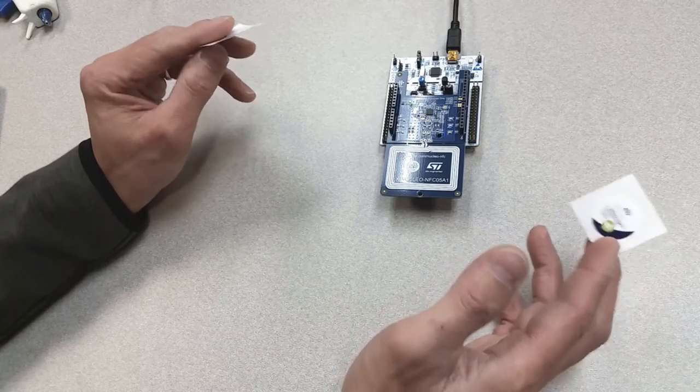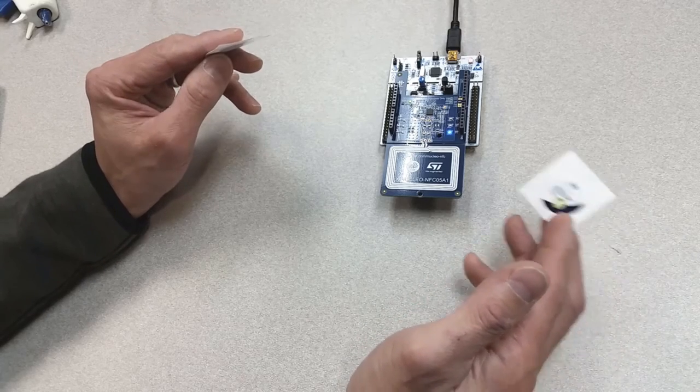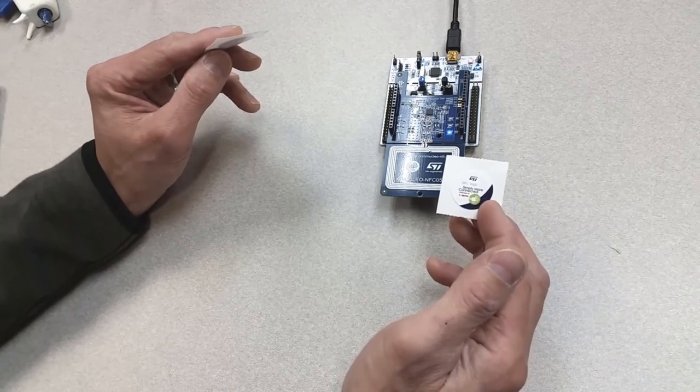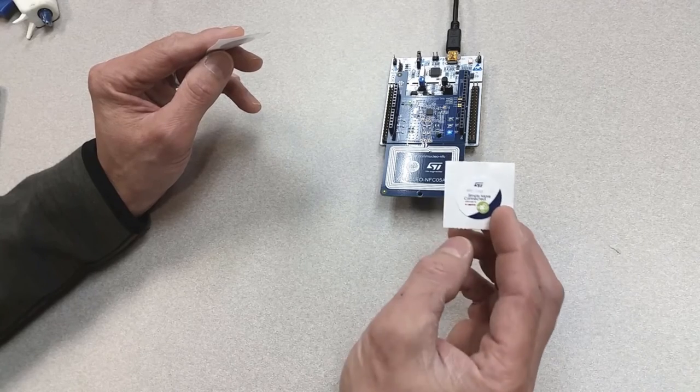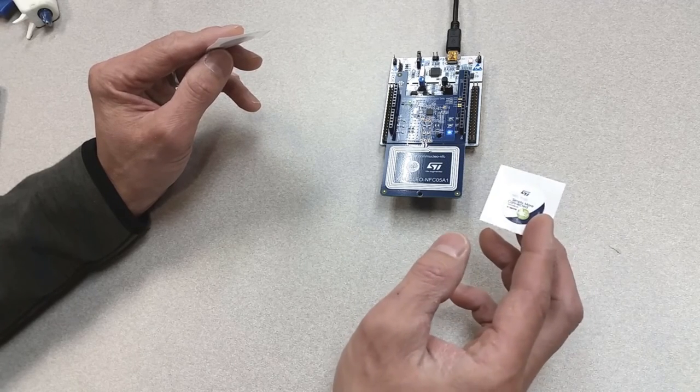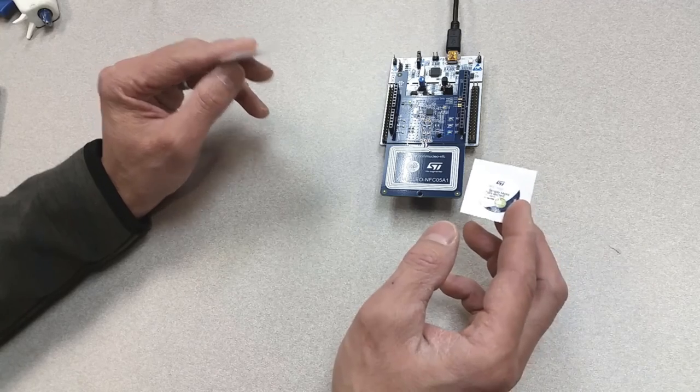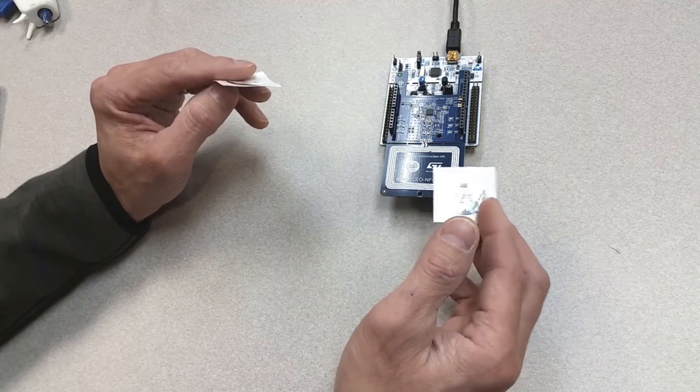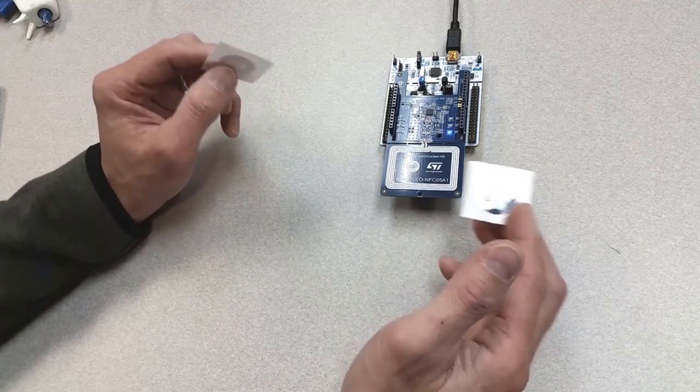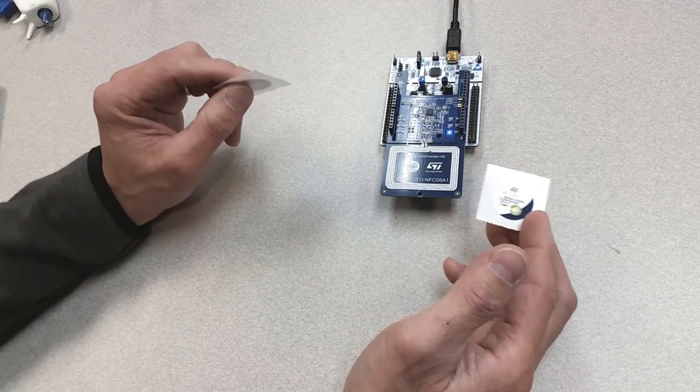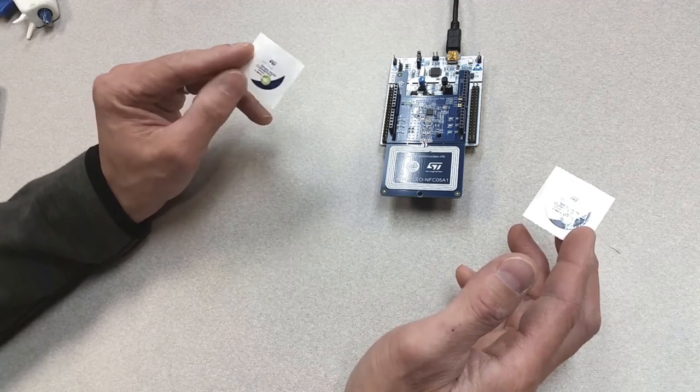So when you look at applications like this, you can actually use it for something like brand protection applications, where you can embed a tag with a special signature so that you can distinguish from the articles or products that have been cloned. All right, thank you.